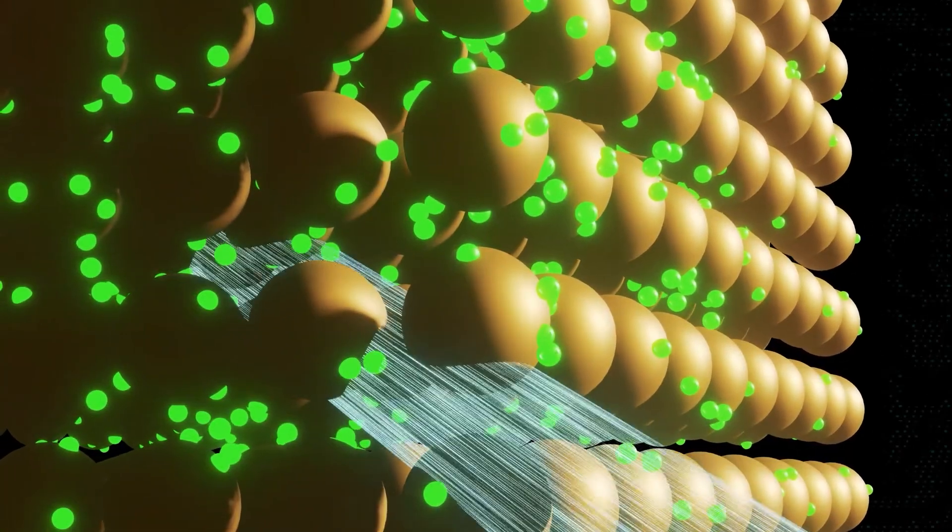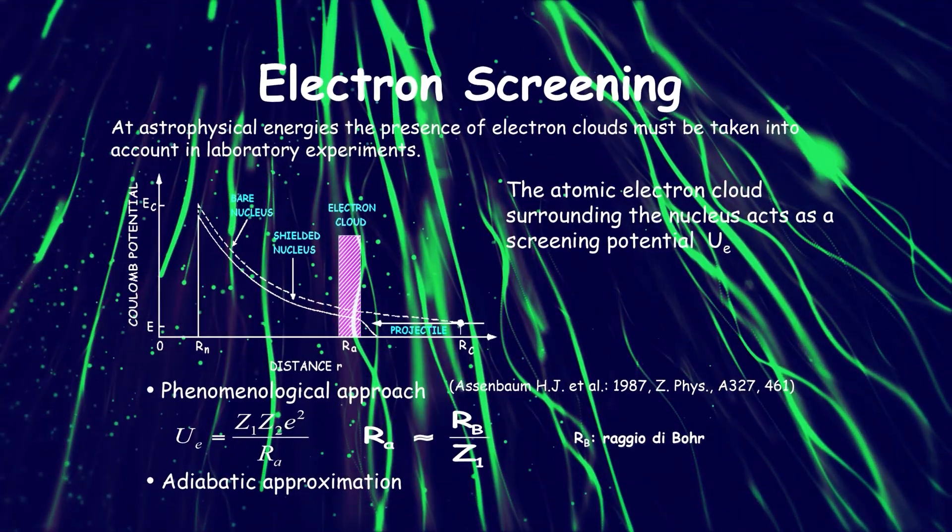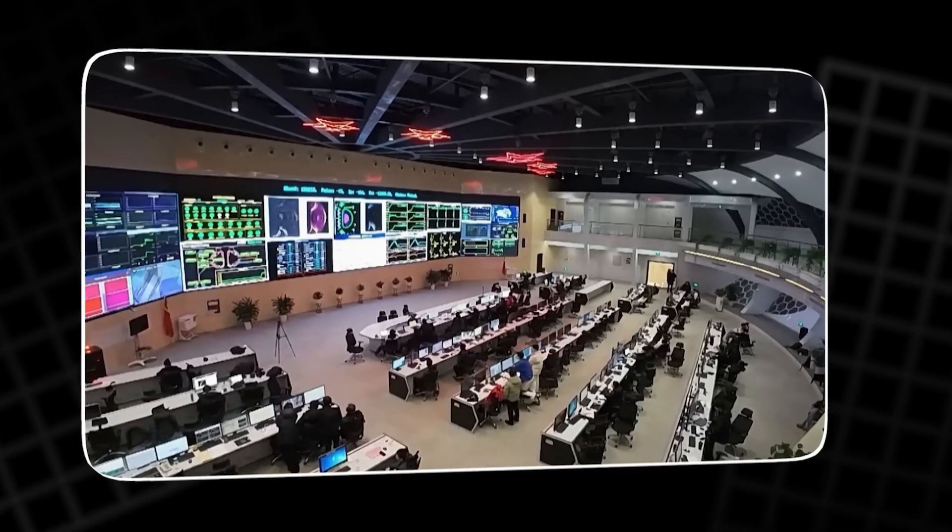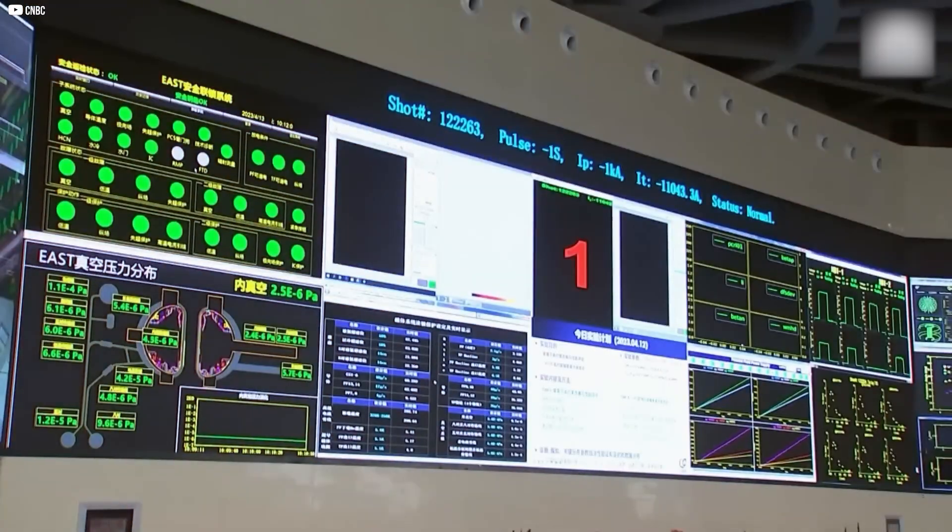LCF, on the other hand, tackles the problem from another angle. It uses dense metal lattices to pack atoms together tightly, making it easier for them to overcome their natural repulsion. That's like lowering the hill itself.